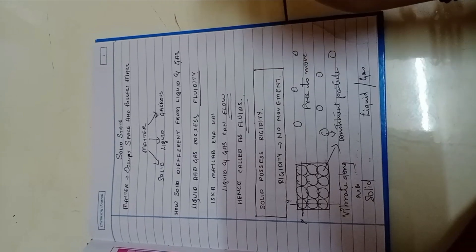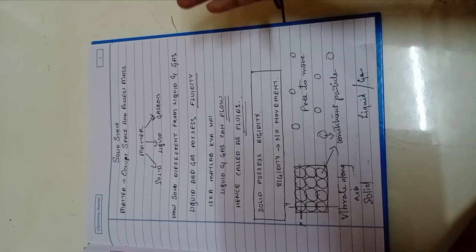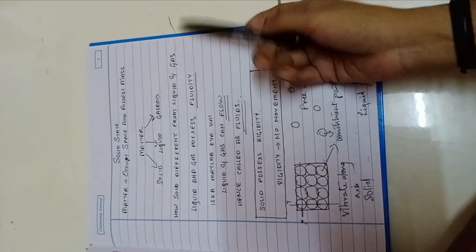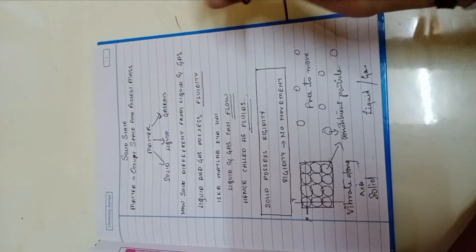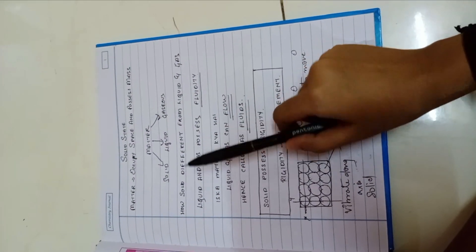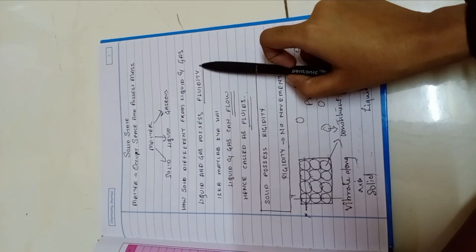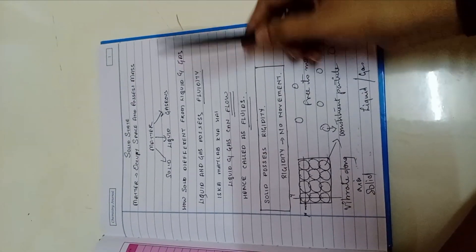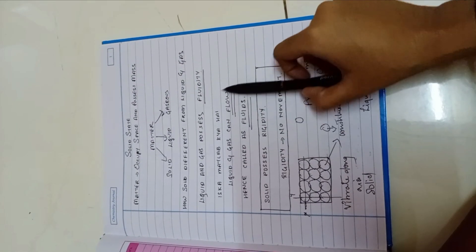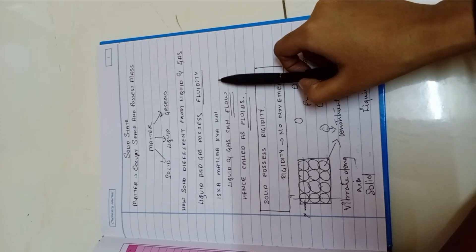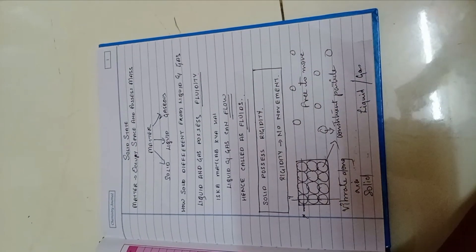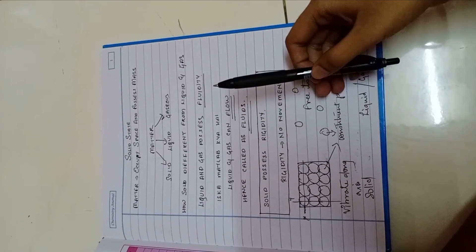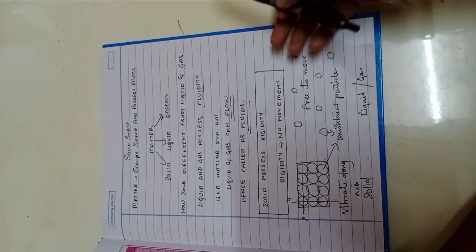The main point here is how solid is different from liquid and gas. You know that liquid and gas possess fluidity. Fluidity means it is something that can flow. Liquid or gas can flow from one place to another. Gas can flow through diffusion. Liquid can also flow. Hence they are called fluids.